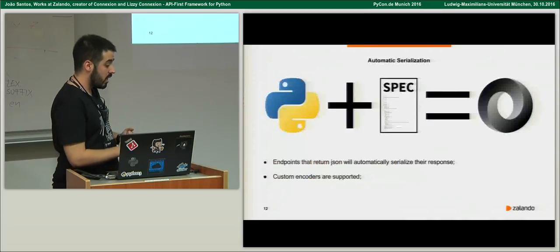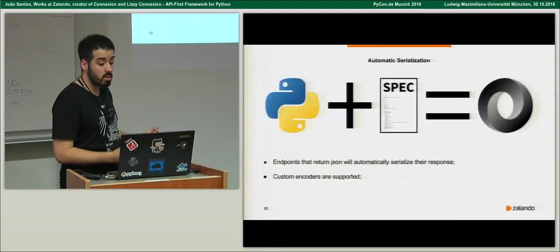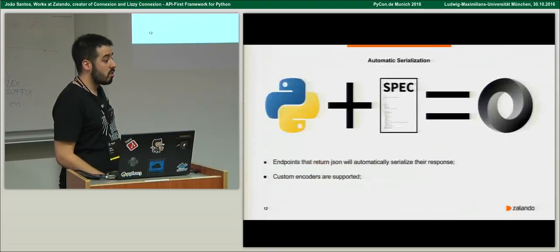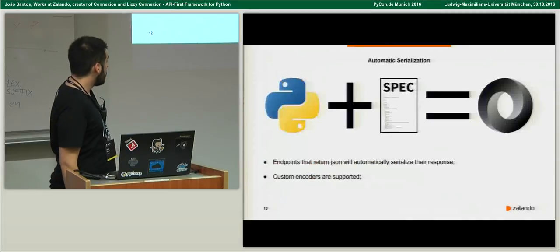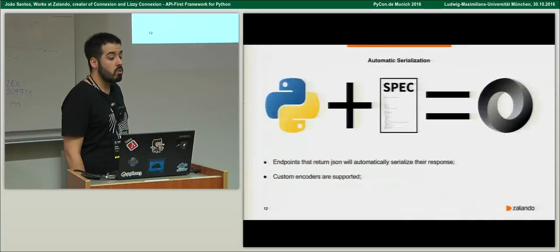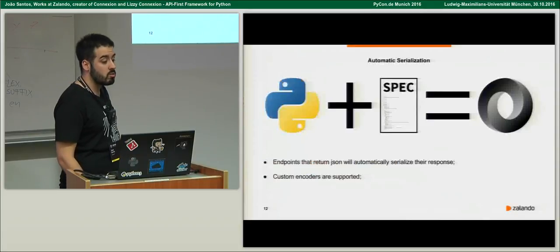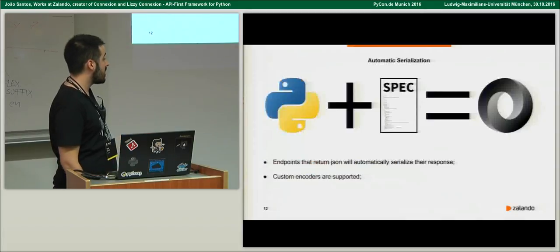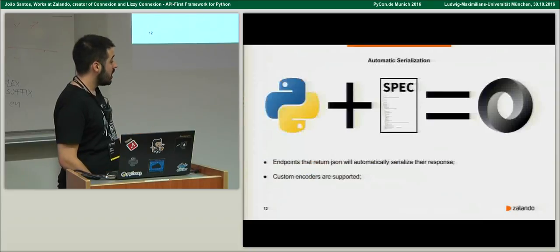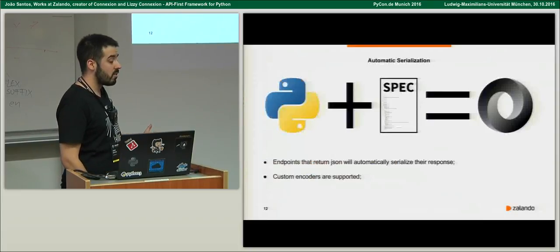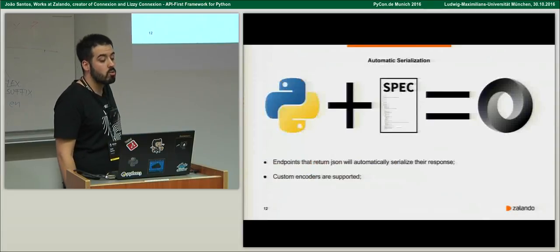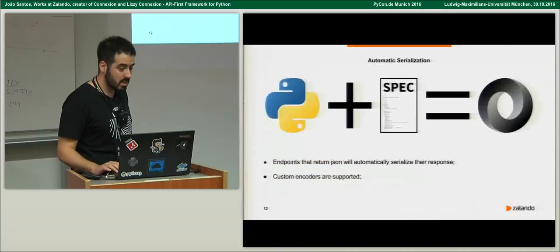If you say that your endpoint returns JSON — and by JSON I mean application/json or application/something+json — Connexion will handle serialization for you. If you are returning a dict that can be serialized by the normal encoder, you can just use that. But if you want to return some custom object, you can use custom encoders exactly as you would in Flask, because Flask is at the bottom of it — and it will just work.